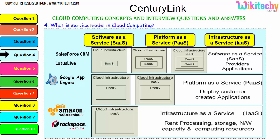Further explaining the models: Software as a Service has the cloud infrastructure with software placed on the operating system placed in the infrastructure. For Platform as a Service, the platform is provided on the server and you can put any application or software you want. For Infrastructure as a Service, a server is given to you and you can install any OS or application. Examples include Lotus Live and Salesforce CRM for SaaS, Windows Azure and Google App Engine for PaaS, and Amazon Web Services and Rackspace Hosting for IaaS.